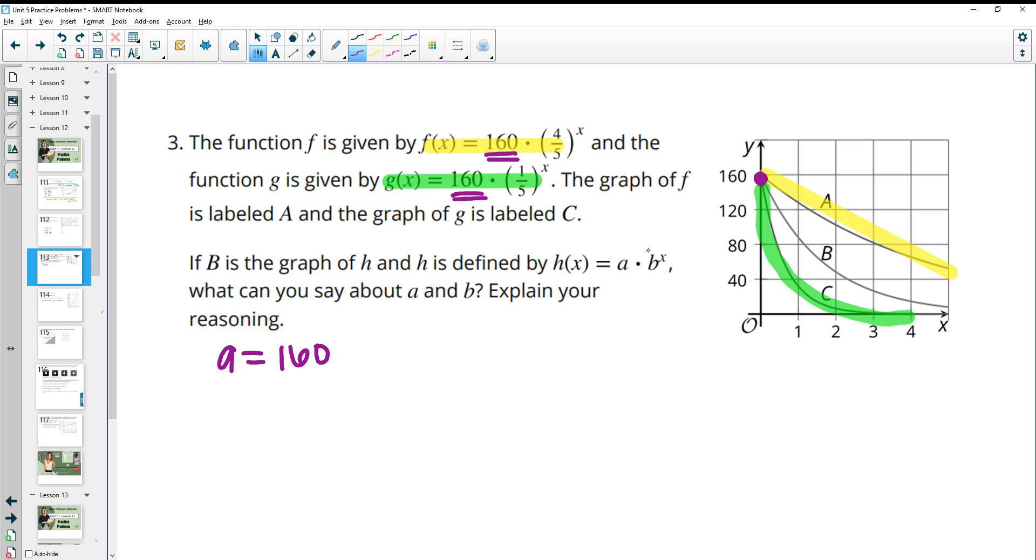And then b is the growth factor, or the decay factor. And so we know that that's somewhere between these two. So we know that one-fifth is definitely lower than our b value. So our b value is greater than one-fifth, and our b value is less than four-fifths.